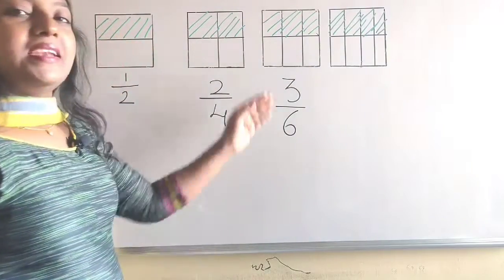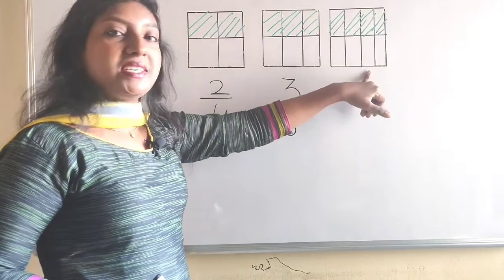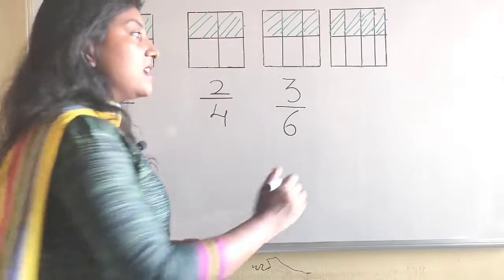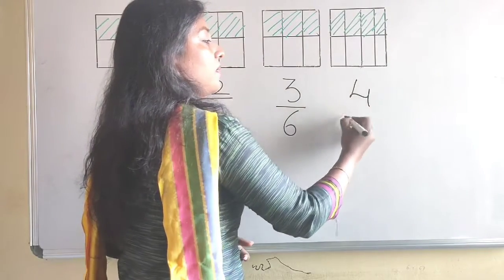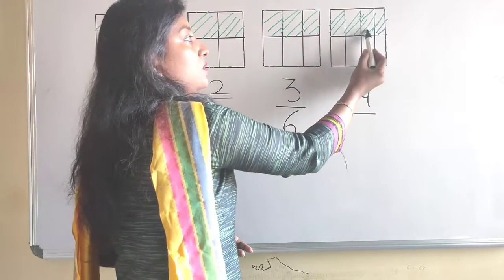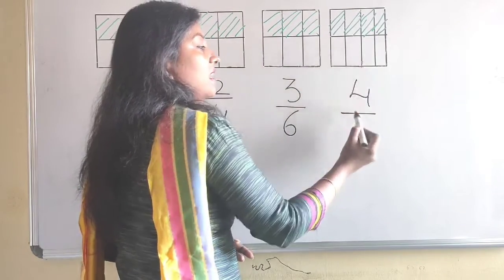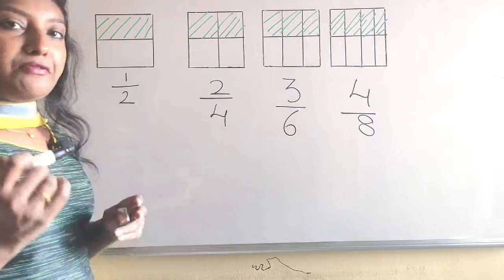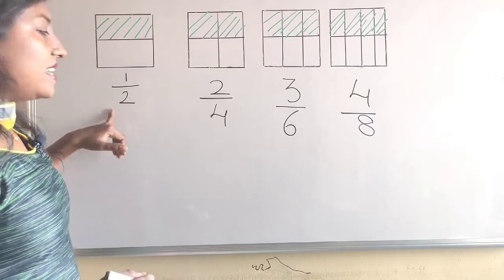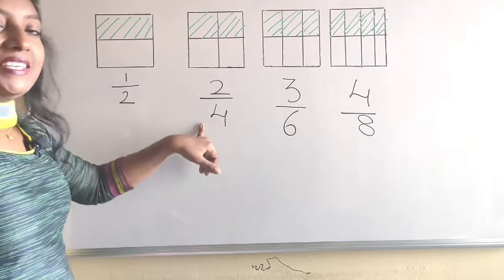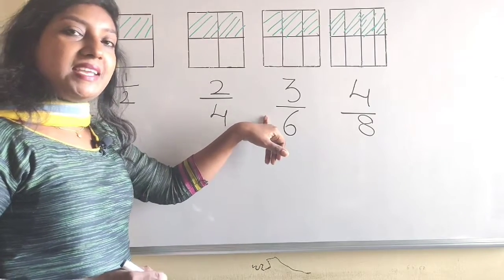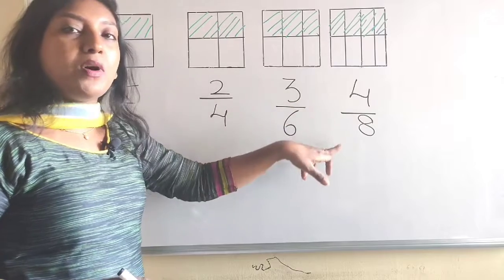The third square has 3 parts shaded out of 6 total parts, giving 3 by 6. Next, let us see the fraction of the fourth square. Here, 4 parts are shaded. So we write 4 upon 8 total parts. If we observe, the fractions of the first square is 1 upon 2, the second square is 2 upon 4, the third square is 3 upon 6, and the fourth square is 4 upon 8.